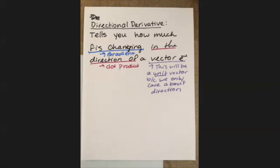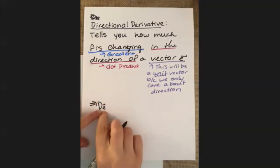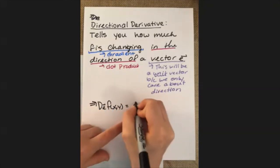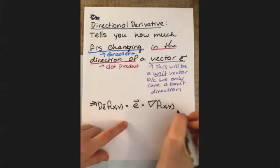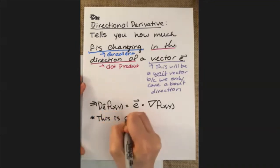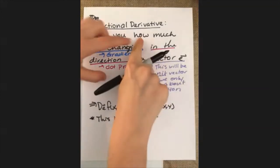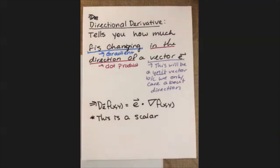Putting these three pieces together, our formula for the directional derivative in a direction E of f(x, y) is equal to that vector E dotted with our gradient. I really want to emphasize that unlike the gradient, this produces a scalar. The directional derivative is a notion of how much, and anytime we have an idea of how much we wind up with a number, whereas the gradient tells you directions of change, so you wind up with a vector.